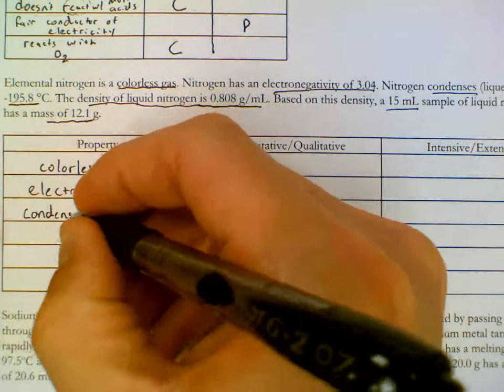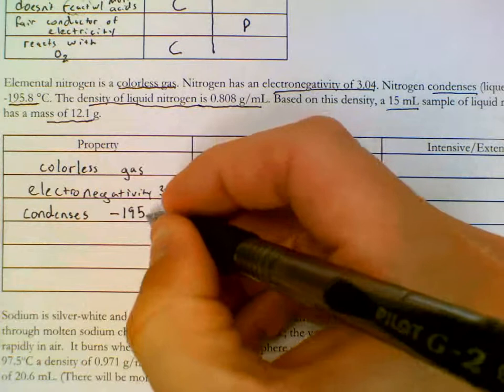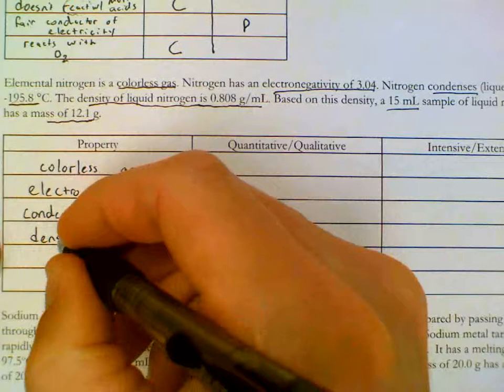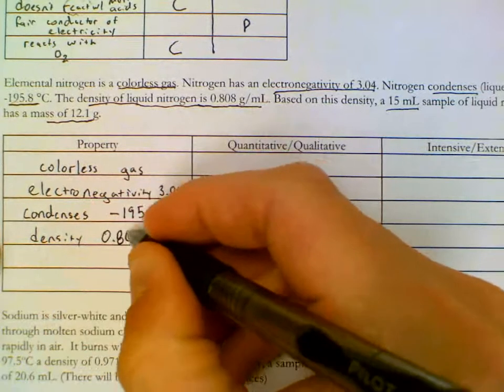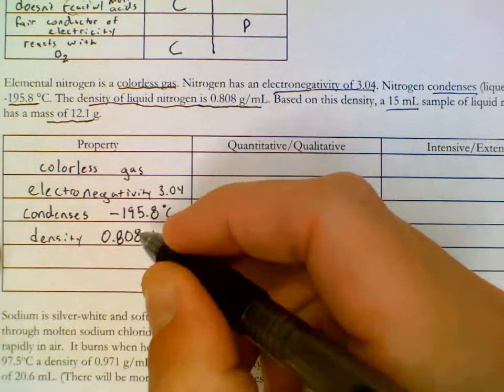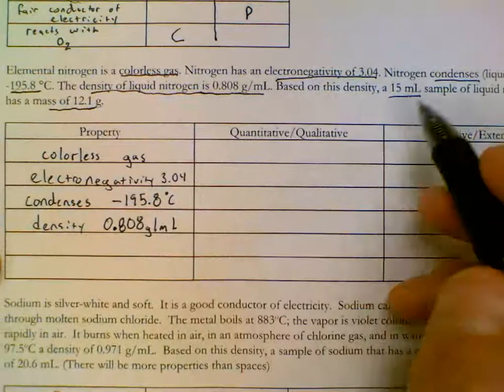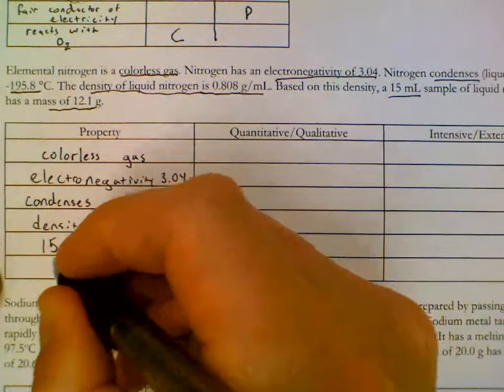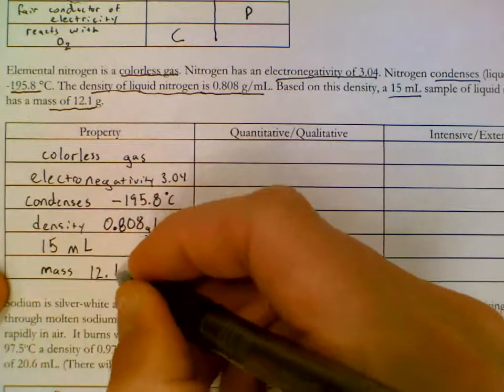Condenses at. The word condense is similar to the word boil. It's a phase change. The density of nitrogen is 0.80 grams per ml. And a 15 ml sample. And a mass of 12.1 grams.